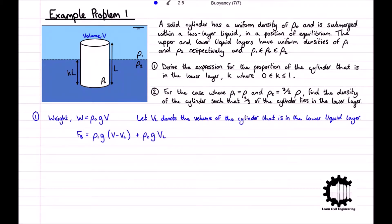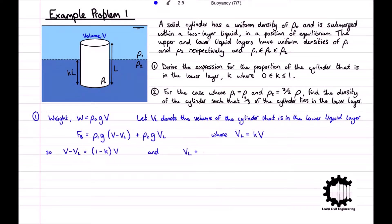We can express V_L as a proportion of the entire volume of the cylinder such that V_L is equal to k times V, where k is the proportion of the cylinder that's in the lower layer — which is what we're trying to find an expression for. Using this, V minus V_L is equal to (1 minus k) times V, and V_L equals k V.